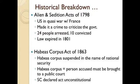Let's go into a historical breakdown of the various times in American history that the government has interfered with our quintessential basic natural rights. The Alien and Sedition Acts of 1798 were passed under President John Adams, the second president of the United States. The U.S. was in a quasi-war — an undeclared war with France — and these laws made it a crime to criticize the government. The Alien Acts actually revoked pre-existing citizenship to attempt to ensure that John Adams would win re-election. Under the Sedition Acts, 24 people were arrested and 10 were convicted. The law then expired in 1801.